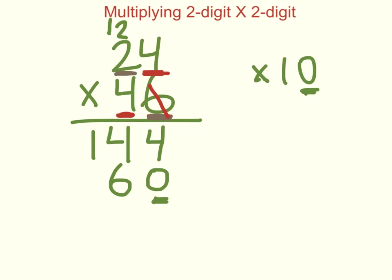I have to make sure I get rid of the carried two from before, when we were working with the ones place value. Now that I've done four times four, I'm going to multiply this four by this two. Four times two is eight, plus the one gives me nine.